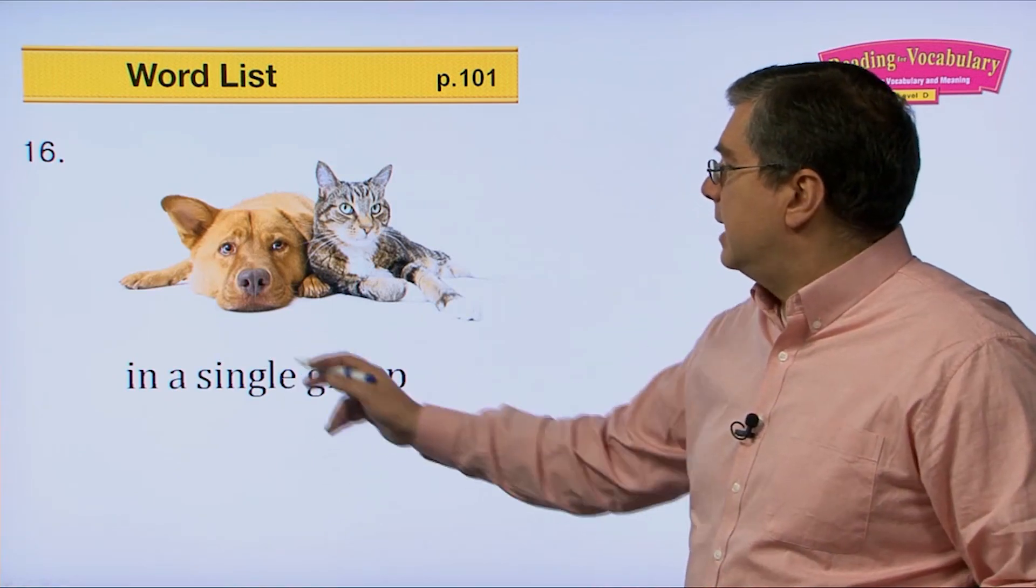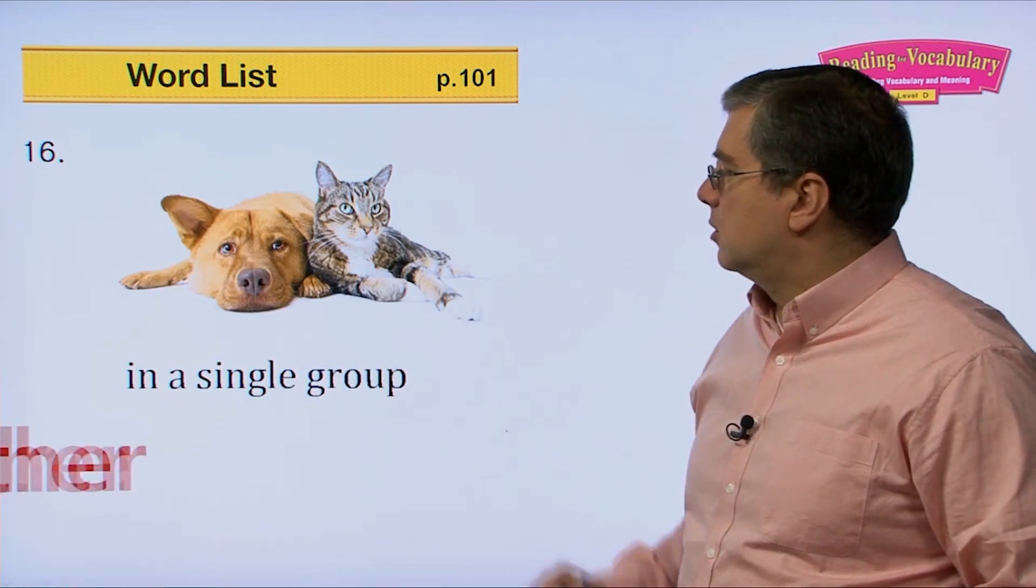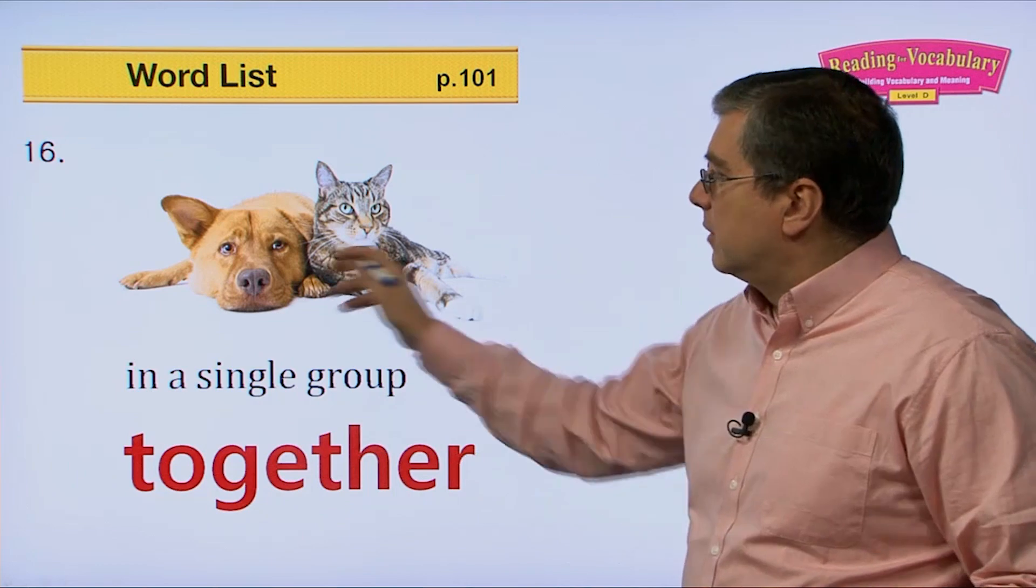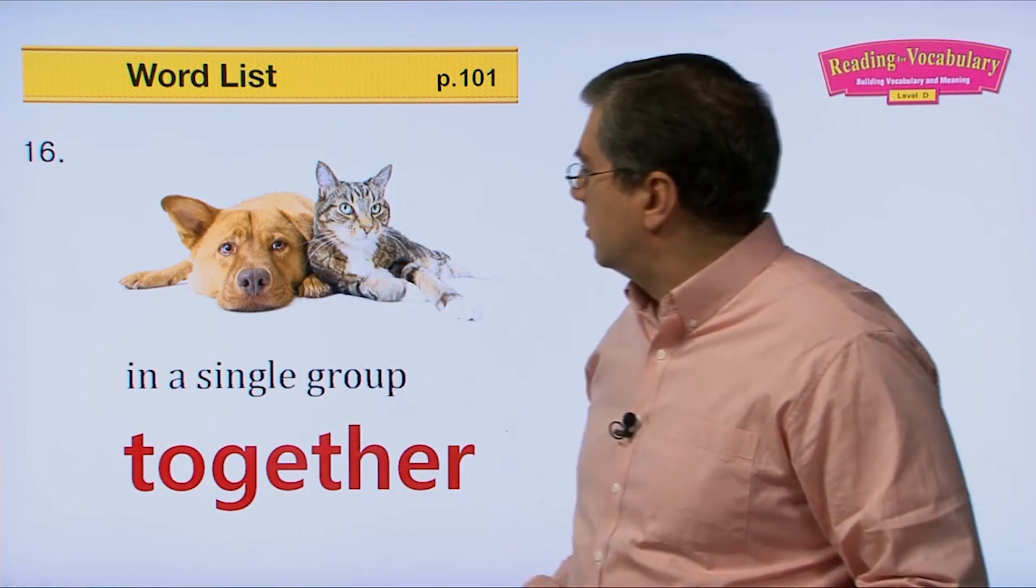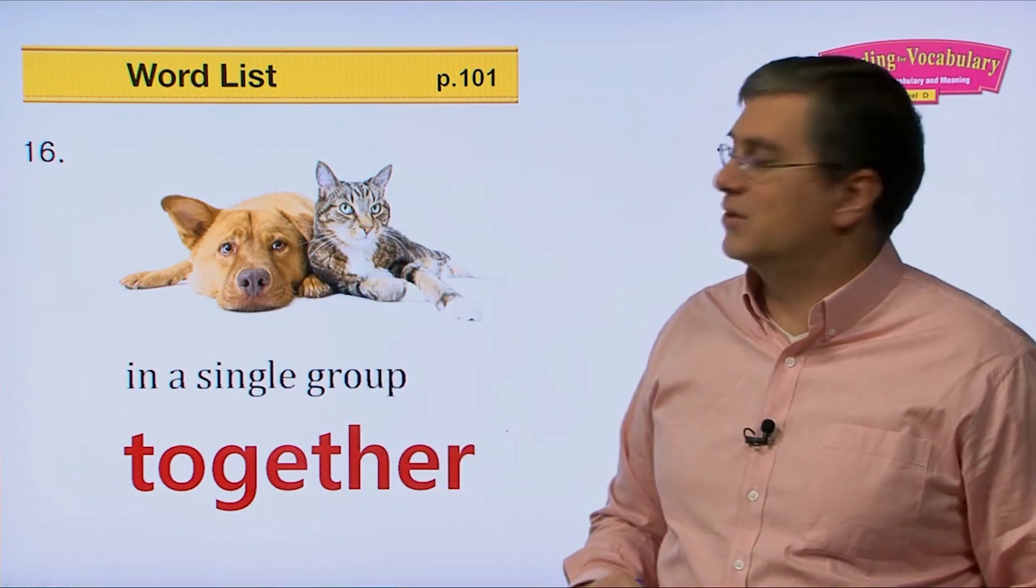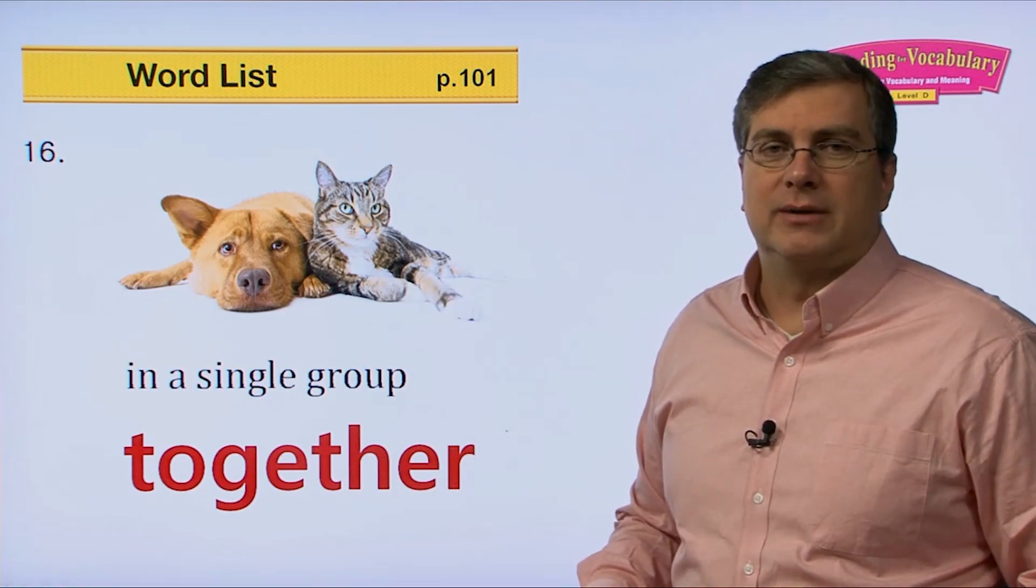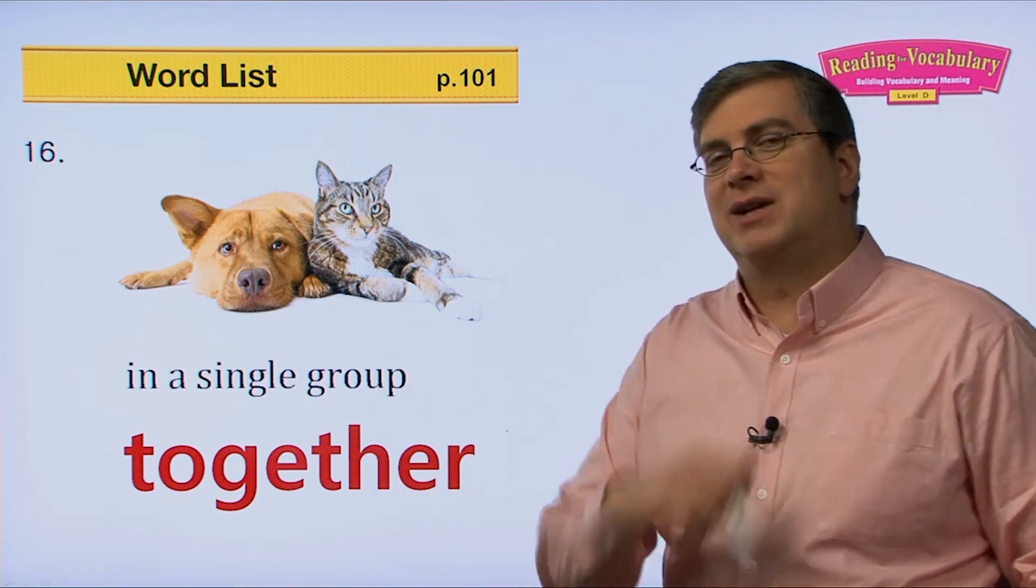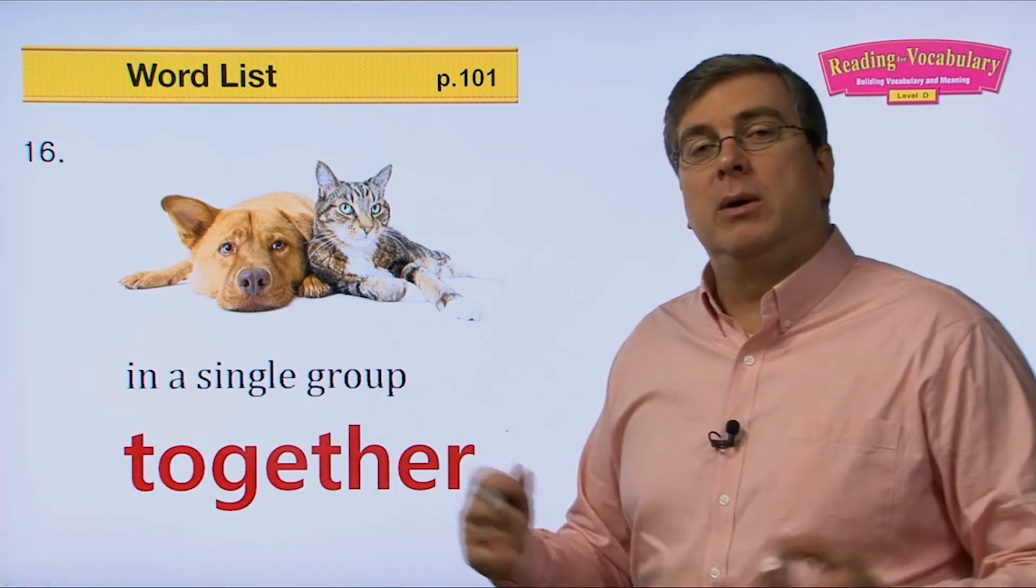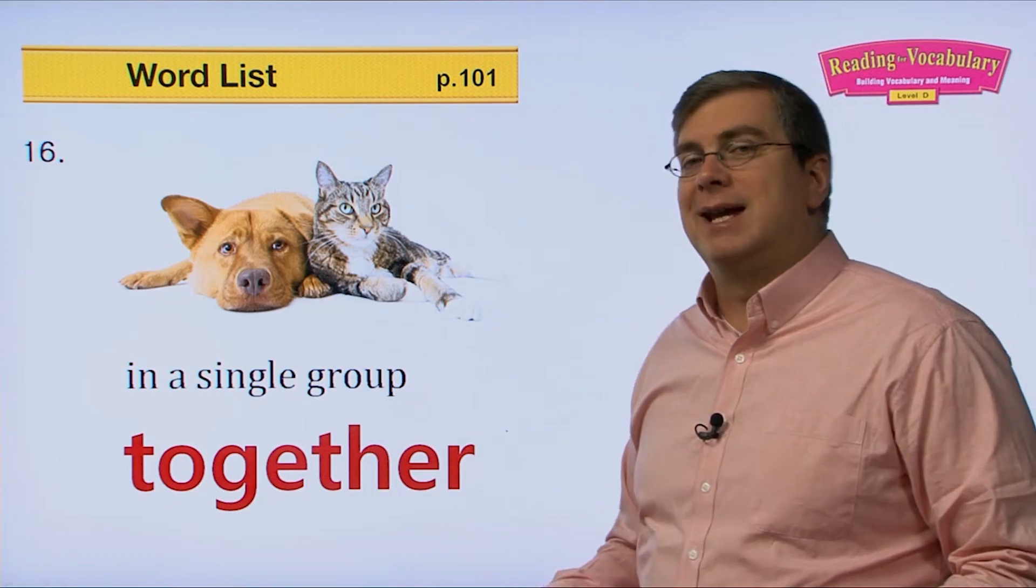Next one. In a single group. So in a single group, we can say together. So if the dog and the cat are in a single group, they look like they're friends. That's a very interesting picture. They're together. They're together. They're pals. They're buddies. They're together in a group. So you're together with your friends. Probably when you go out to play, you're together in a group.